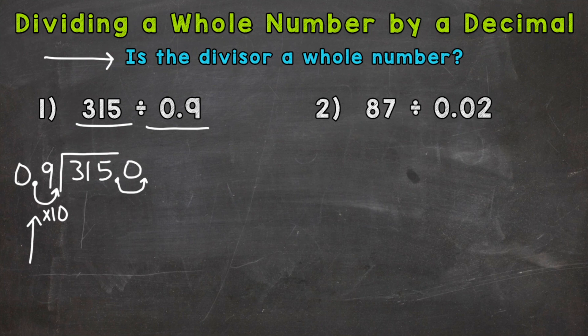So now we can rewrite the problem without those arrows underneath and make it a little more neat and easier to work with. So we have 9 on the outside, the divisor, and we have 3,150 as our dividend. And the decimal is at the end here, the end of a whole number. So now we're ready to go through the division process. Divide, multiply, subtract, bring down, and repeat.